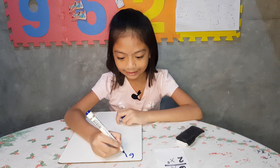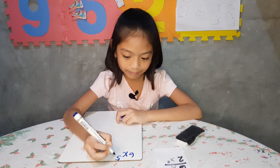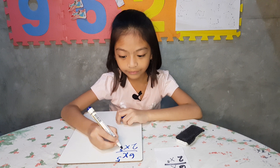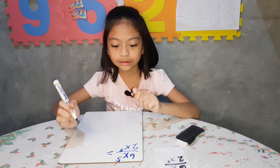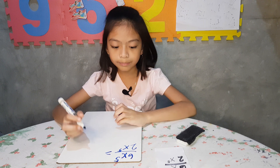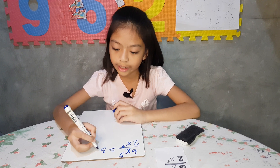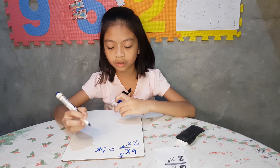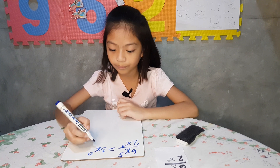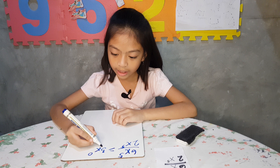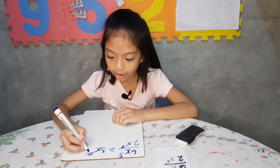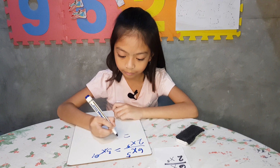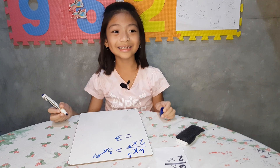It's 6x to the 5th power divided by 2x to the 5th power. So, 6 divided by 2 equals 3, and don't forget to put the x, and then 5 minus 5 equals 0. The x and the zero will turn to 1. 3 times 1 equals 3. And that's the answer.